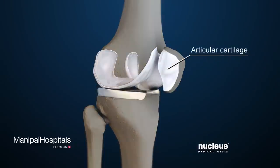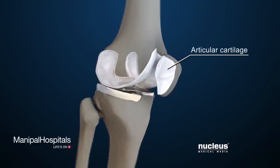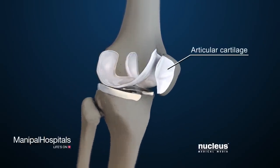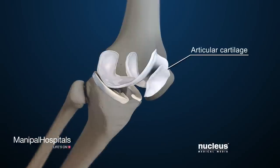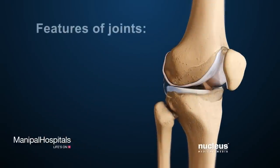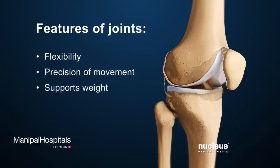Articular cartilage is a tough, slippery covering on the ends of the bones, which allows smooth joint movement. Joints give the body flexibility, precision of movement, and help in supporting the body's weight.